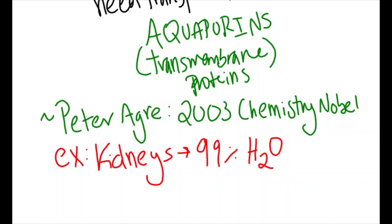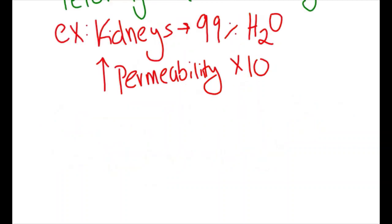These aquaporins prevent us from dying of dehydration by reabsorbing 99% of water in the kidneys. The presence of such water channels increases the permeability of membranes to water by as much as tenfold, making them important and essential in our lives and day-to-day functions.